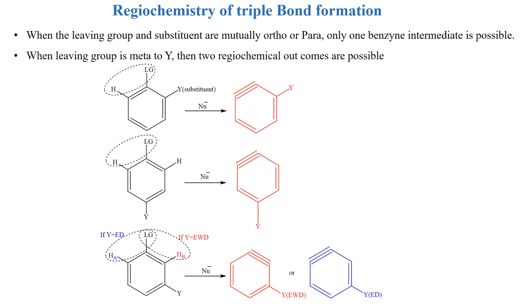Next is the regiochemistry of triple bond formation. Regiochemistry of the triple bond depends upon the position of the substituent and the leaving group. If a substituent and leaving group are at ortho or para position to each other, then only one benzyne intermediate is possible, as we can see in the first two examples, where the leaving group and substituents are at ortho position in the first case, and at para position in the second.